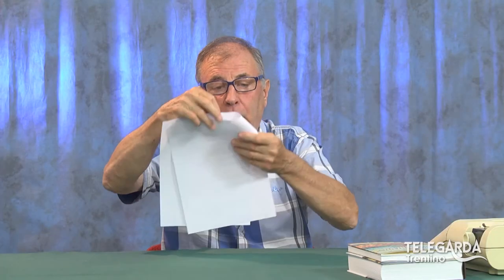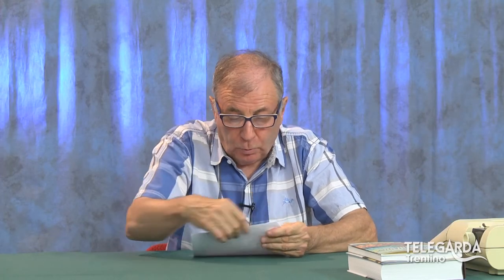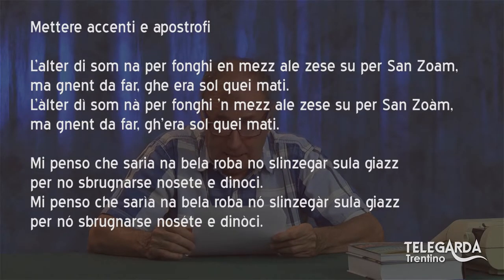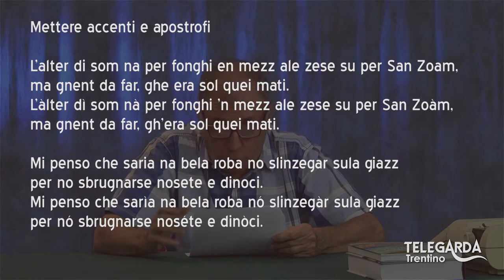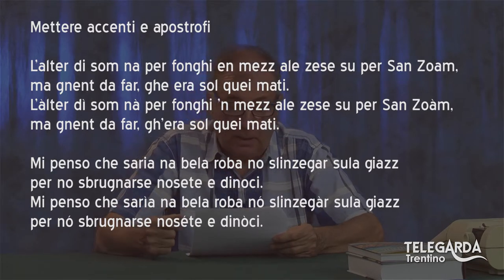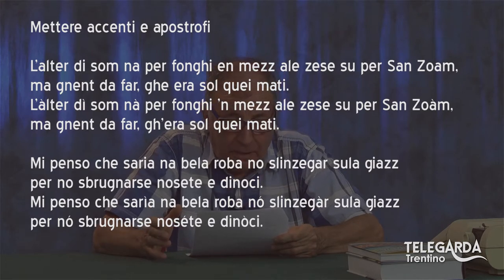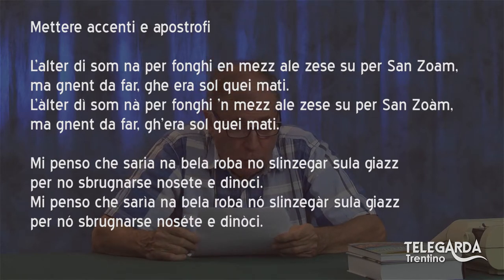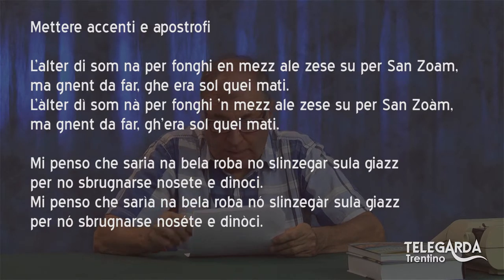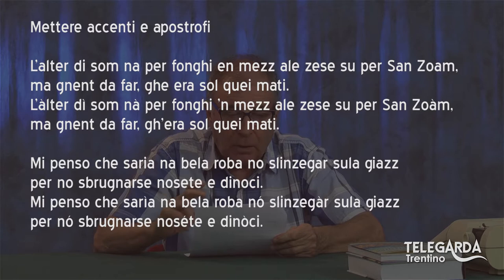Per concludere, vi faccio sentire delle frasi a cui mancano accenti e apostrofi. Prima la versione scorretta: 'L'alter di somna per fonghi in mezzo all'estese su per sanzoam, ma niente da fare, ghera sol quei mati.' Poi vedete come va scritto — ho cercato di leggere un po' scorretto tenendo conto degli errori.